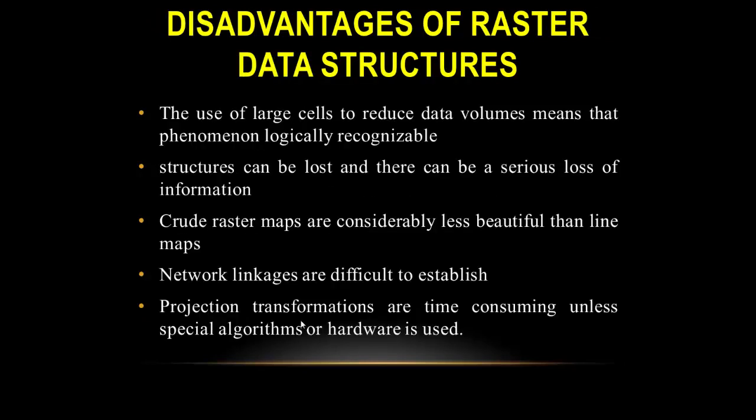The disadvantages of raster data structures are: the use of large cells to reduce data volumes means that logically recognizable structures can be lost, and there can be a serious loss of information. Raster maps are considerably less visually appealing than line maps. Network linkages are difficult to establish, and projection transformations are time-consuming unless special algorithms or hardware are used.